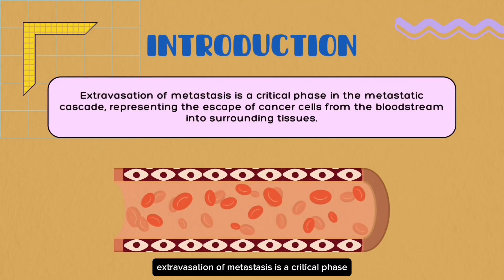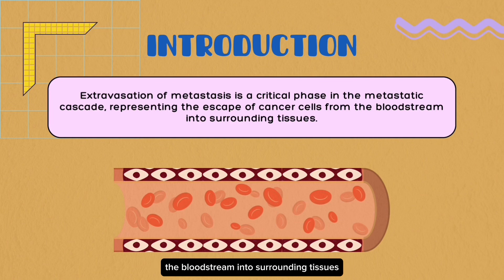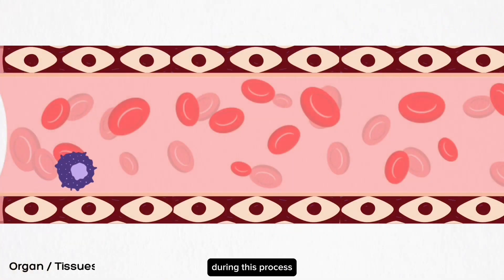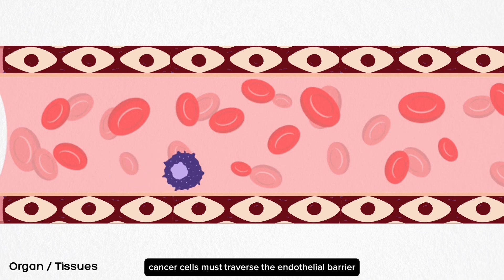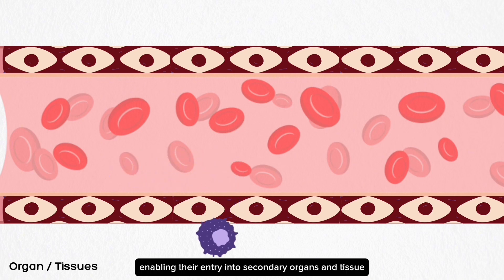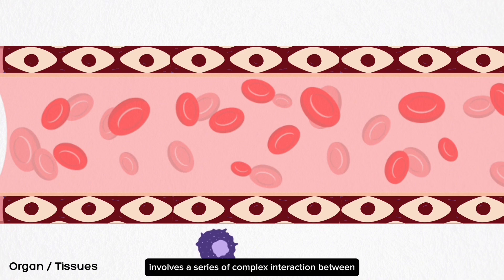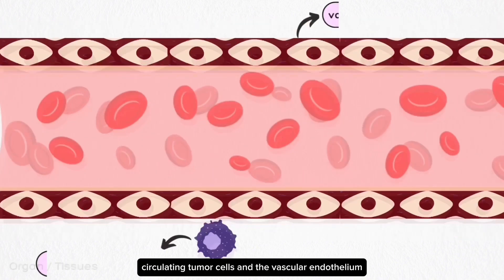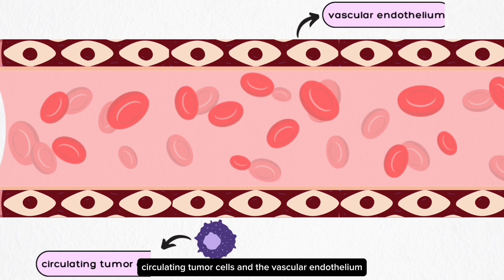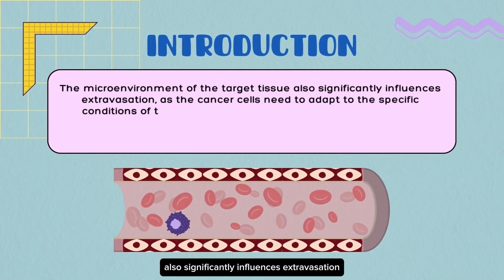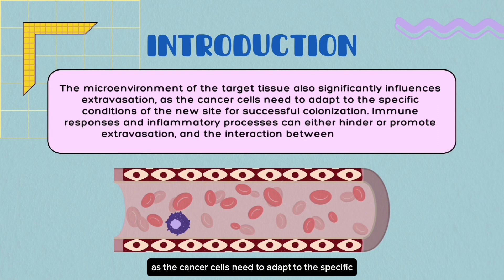Extravasation of metastasis is a critical phase in the metastatic cascade, representing the escape of cancer cells from the bloodstream into surrounding tissues. During this process, cancer cells must traverse the endothelial barrier of blood vessels, enabling their entry into secondary organs and tissues. This journey involves complex interactions between circulating tumor cells and the vascular endothelium, influenced by various molecular and cellular factors. The microenvironment of the target tissue also significantly influences extravasation, as cancer cells need to adapt to the specific conditions of the new site for successful colonization.